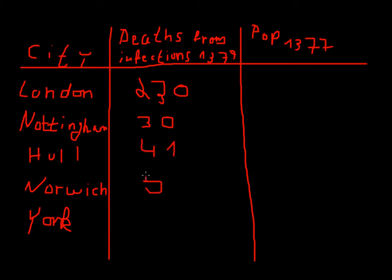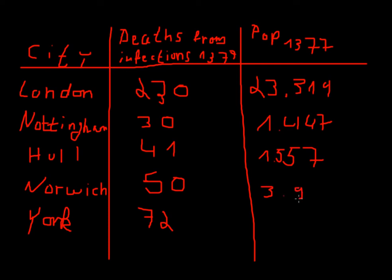Norwich let's say 50 and York let's say 72. And the population in London, this is real data by the way, was 23,314. In Nottingham it was 1,447 and Hull it was 1,557. In Norwich was 3,952 and in York it was 7,248.